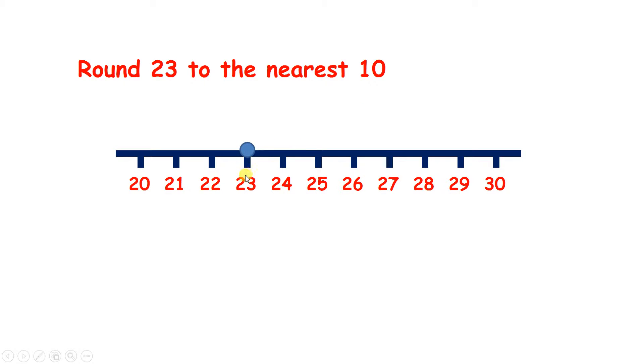So on our number line, we have the number 23, and we have the previous multiple of 10, which is 20, and the next multiple of 10, which is 30. So any number is between two multiples of 10, and 23 is between 20 and 30.